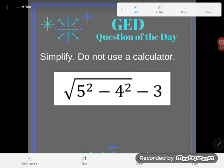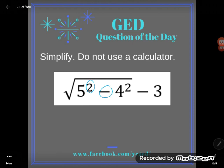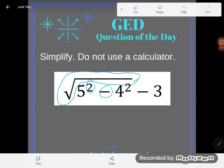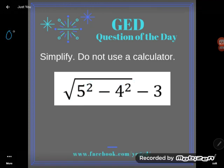So notice that I have multiple operations going on in here. I have some exponents, I have some subtraction, I have a radical. Anytime you have more than one operation, more than one thing to do in math, you should simplify according to the order of operations. So what order do we go in in math? Not necessarily left to right, we follow the order of operations.